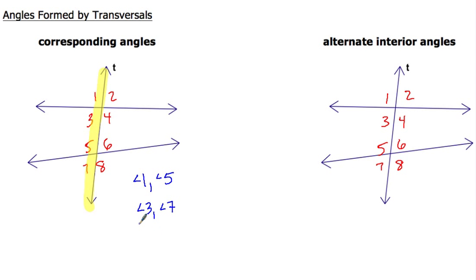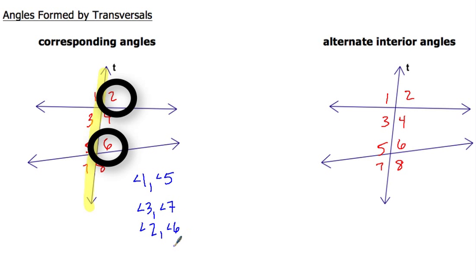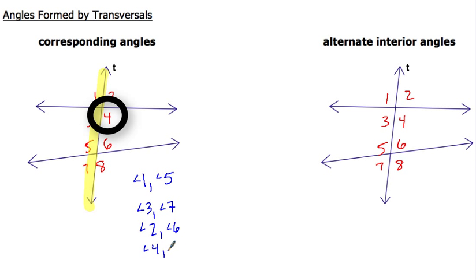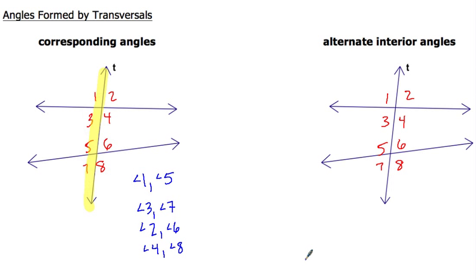So those are two pairs of corresponding angles. If you see a pattern here, that's great. Our other pairs are angle two with angle six, and angle four paired with angle eight. So those are our four pairs of corresponding angles when we have two lines cut by transversal T.